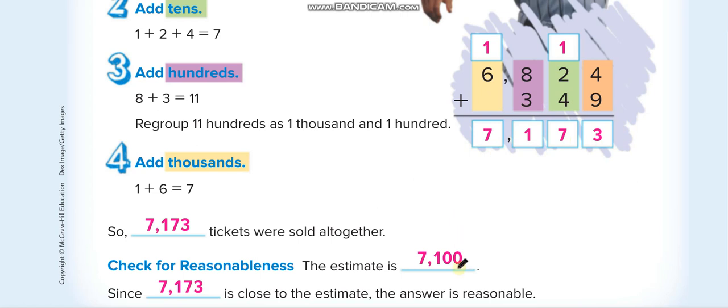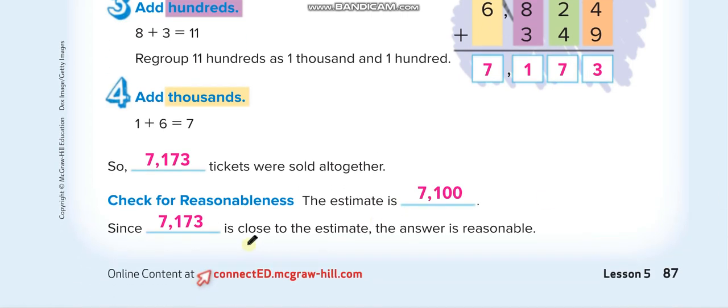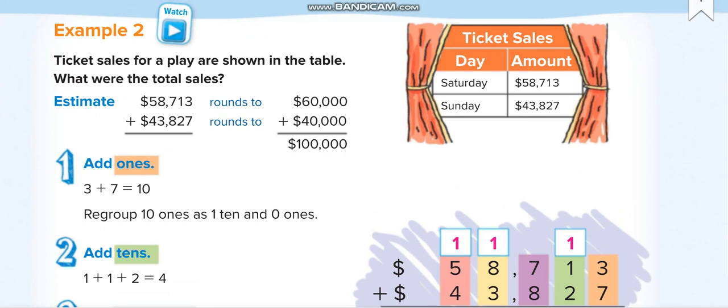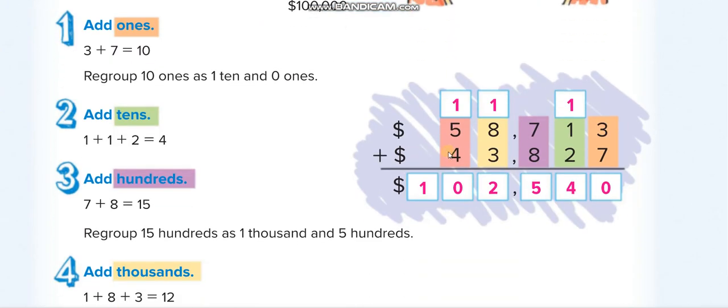Next page, next example. Ticket sales for a play are shown in the table. What were the total sales? For Saturday, 58,713. For Sunday, 43,827. We wrote both numbers up and down, the place values under each other.